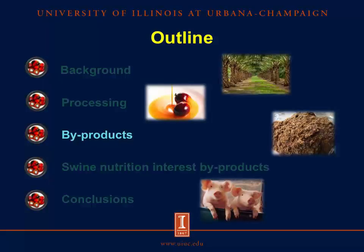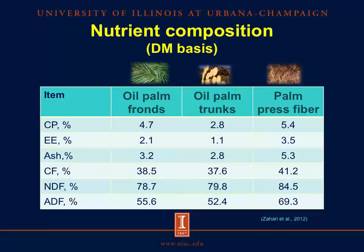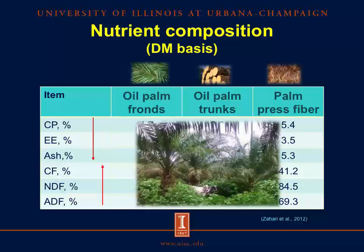Now let's review the byproducts from the whole process. From cultivation to oil extraction, there are seven byproducts that can be used in animal nutrition: oil palm fronds, oil palm trunks, palm pressed fiber, decanter cake, palm oil sludge, palm kernel expeller, and palm kernel meal. However, not all of them can be used in swine nutrition. Oil palm fronds, oil palm trunks, and palm pressed fiber have a low concentration of crude protein, fat, and ash, and a high concentration of fiber. Therefore, they cannot be used for swine nutrition but are used for ruminant nutrition.